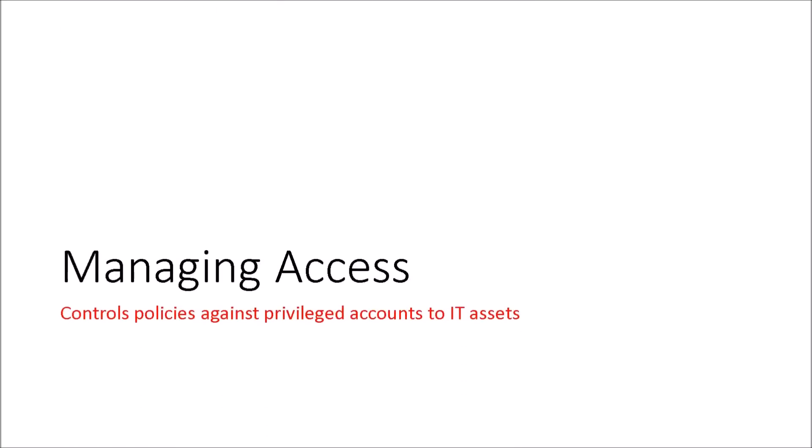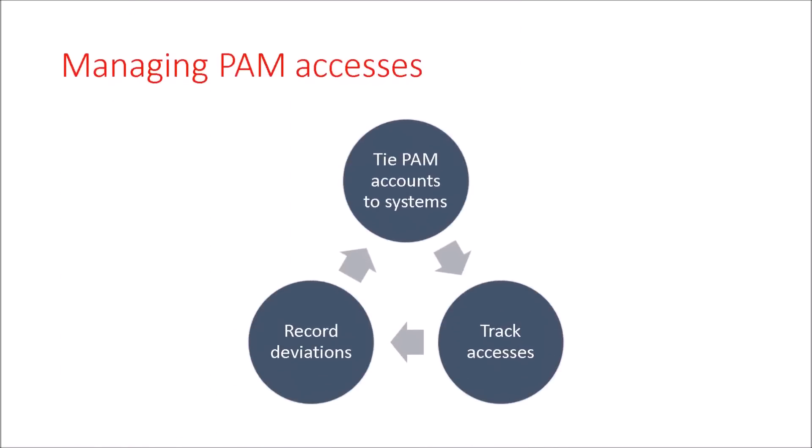On managing access: we need to control the policies that privileged accounts have to IT assets. There are many types of privileged accounts — system users, endpoint desktop engineers, and others residing in an enterprise. We want to manage the accesses of each, whether they are tied to systems, domains, work, or projects. We track entitlements for each account, group those accesses, build reports, and record deviations in real time so we can flag anomalies and quickly apply security hardening or disable accounts.